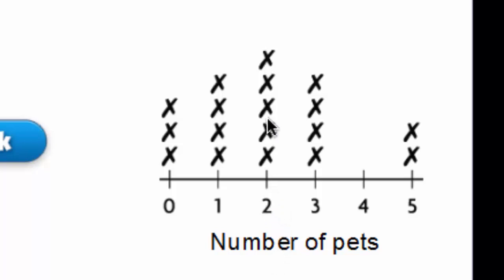Let's look at the data. Here are the two pets. Do we want to know how many have two pets? No. We want to know how many have more than two. One, two, three, four, five. Six students have more than two pets. They either have three, four, or five.